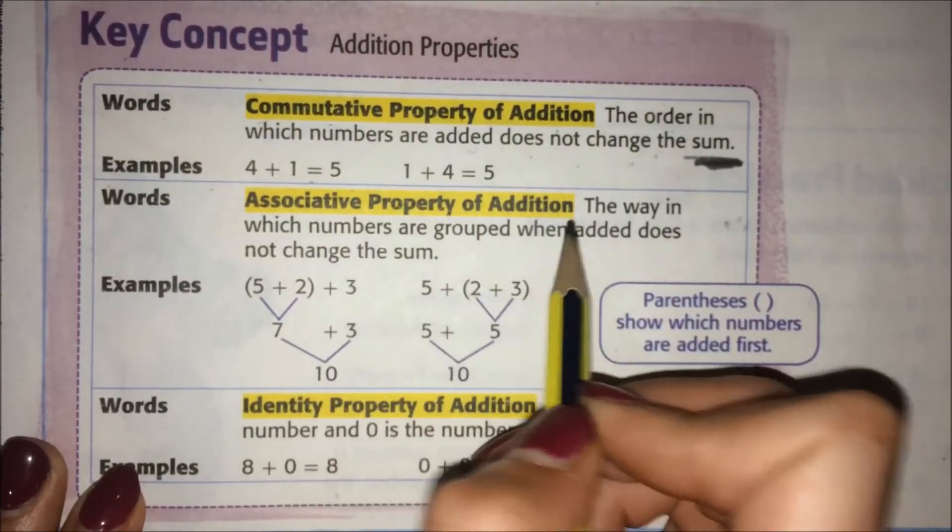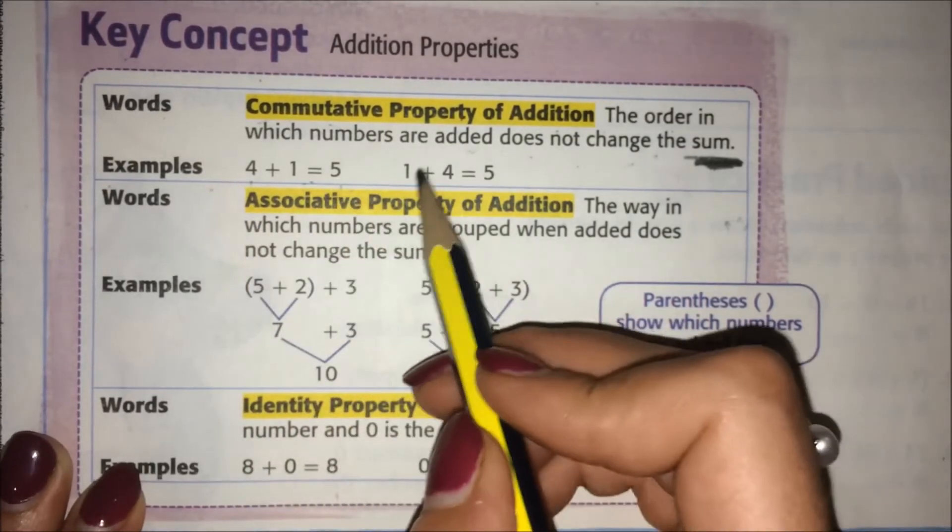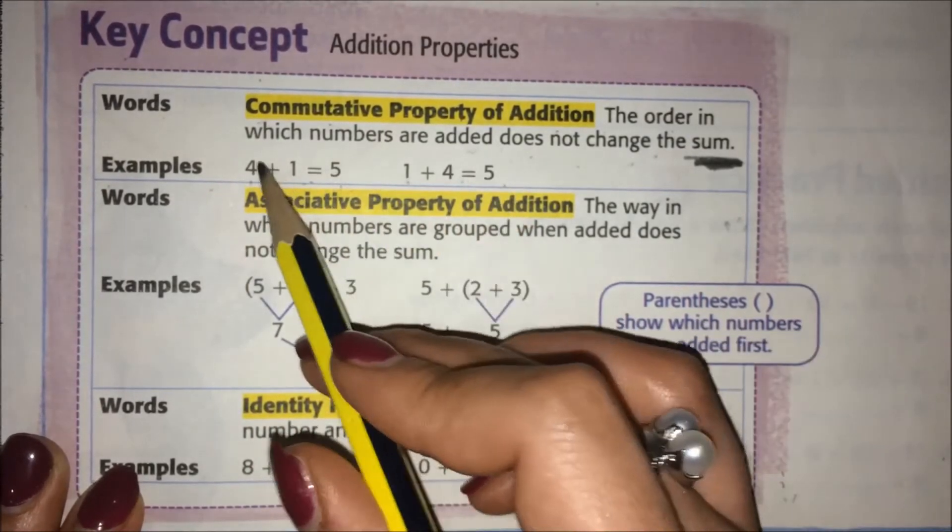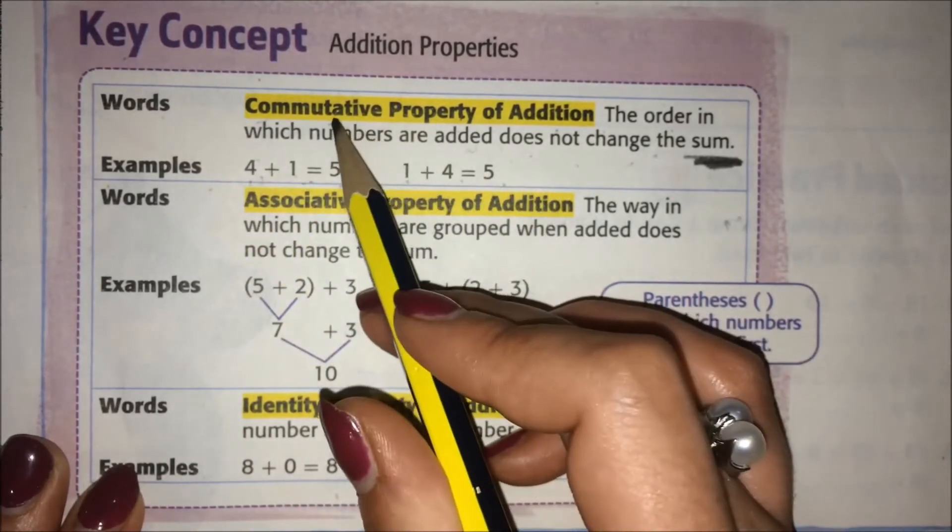So 4+1 equals 5, that's the sum. So the order doesn't matter. Four plus one equals five, and one plus four equals five. It doesn't matter if you write the four or the one first. That's the commutative.